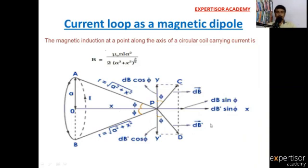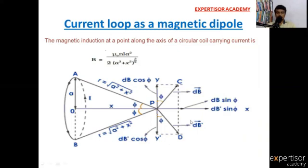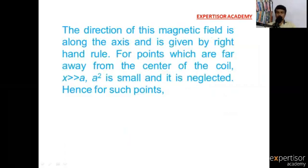The final result of this loop — the magnetic field generated at a point along the axis of the circular loop — is: B = μ₀niа² divided by 2 into (a² + x²)^(3/2). So this is the magnetic field.